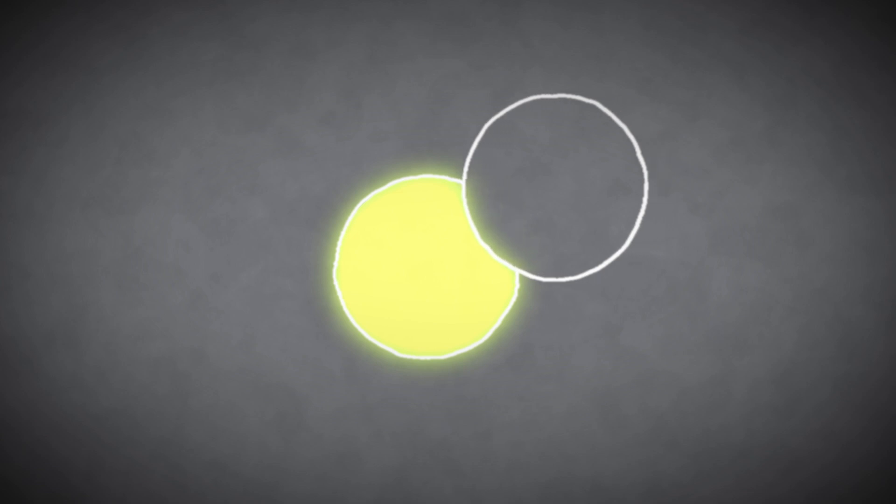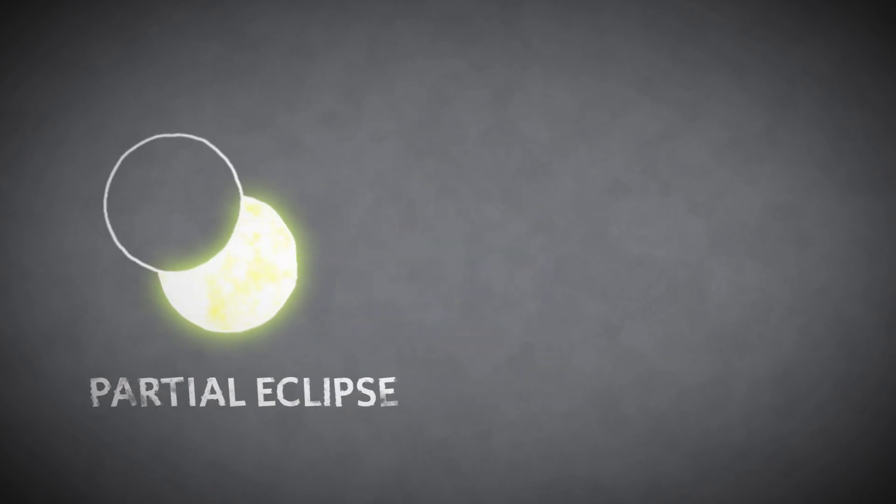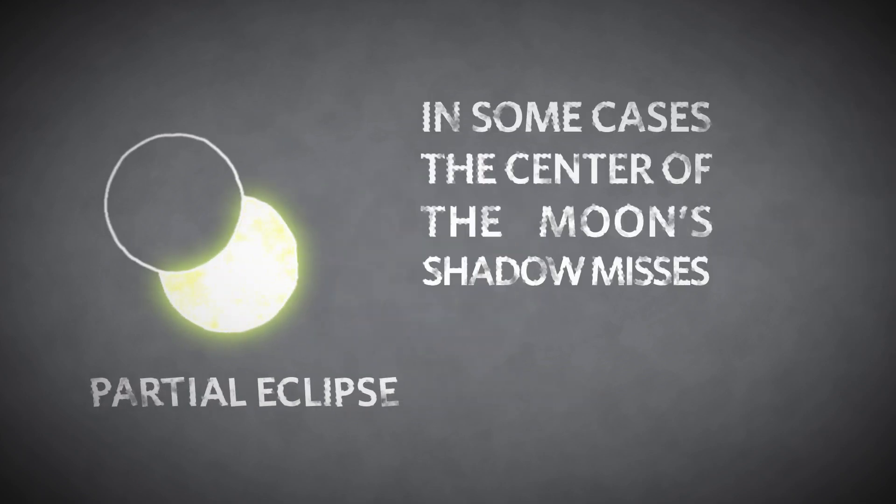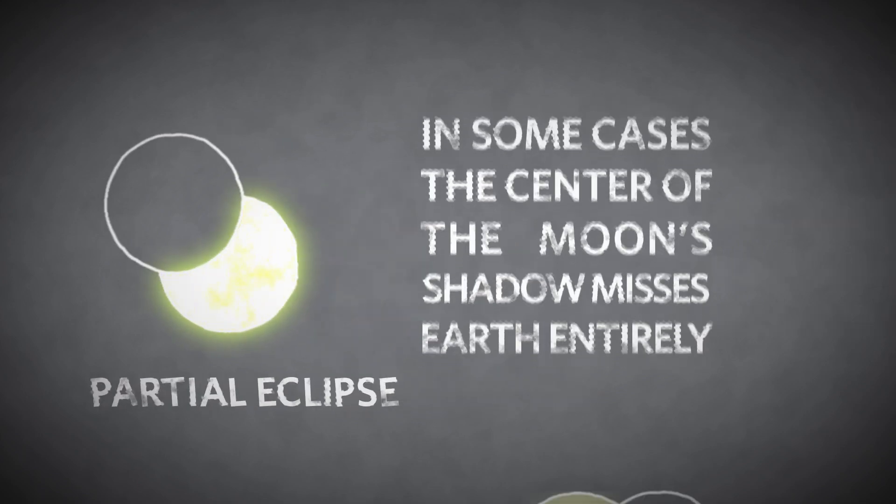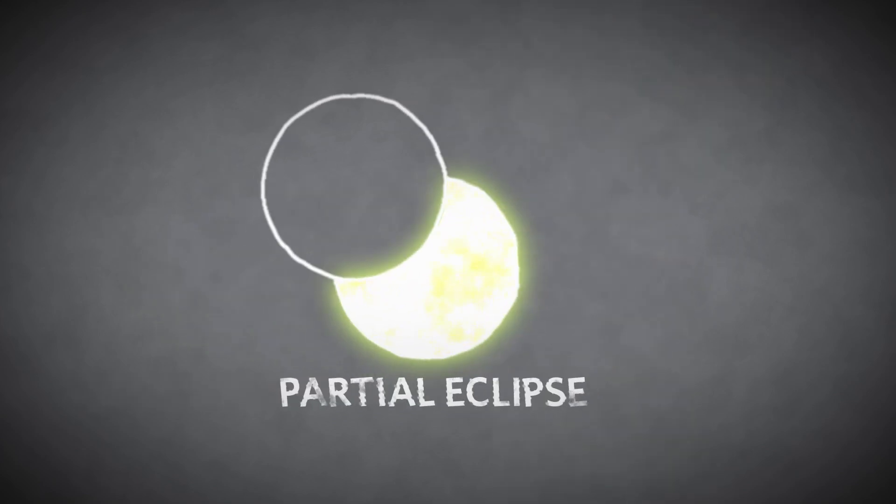Observers not located on the path of the moon's shadow will see only a partial eclipse, in which the moon's silhouette doesn't completely block the sun from view. In some cases, the center of the moon's shadow misses Earth entirely, and no one gets to see totality or the annulus, although a partial eclipse can still be observed.